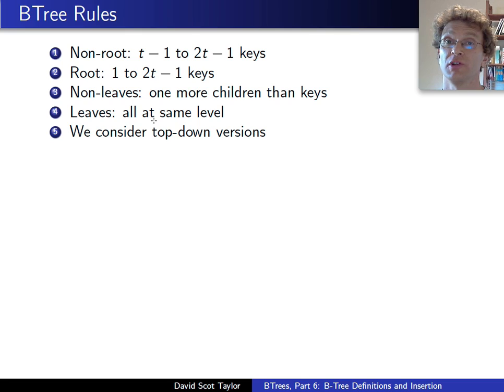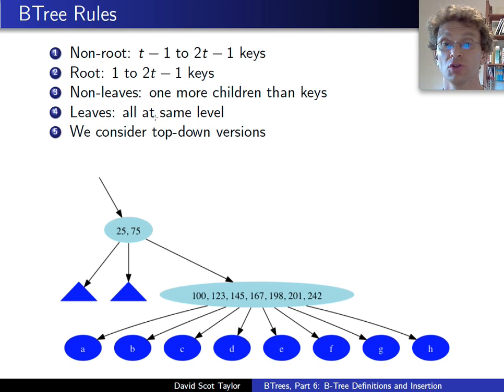We're going to look at top-down versions here. That's the last version of the two-three-four tree we saw. There are also bottom-up versions. And if we look at a B-tree here, the one issue that's a little hard when we try to illustrate them is they are so efficient, we basically cannot draw a large B-tree. The screen becomes overwhelmed.